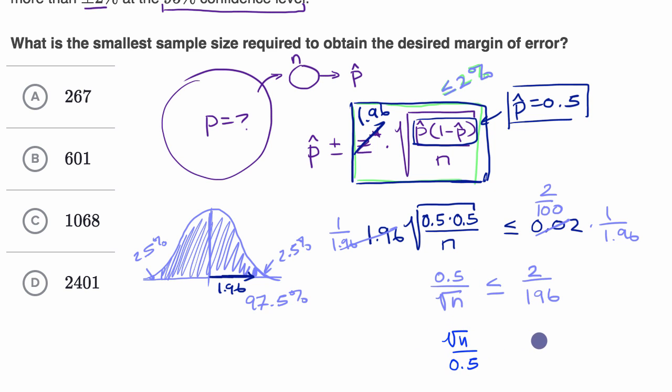We could take the reciprocal of both sides. We could say the square root of n over 0.5 and 196 over 2, which is 98. If we take the reciprocal of both sides, then you're going to swap the inequality, so it's going to be greater than or equal to.